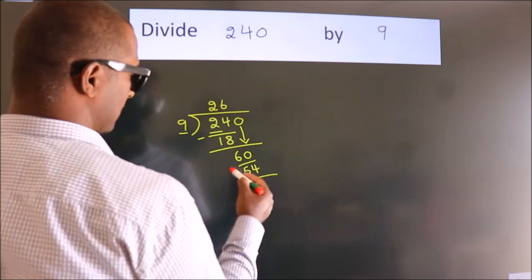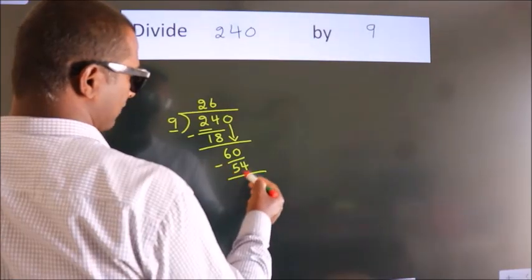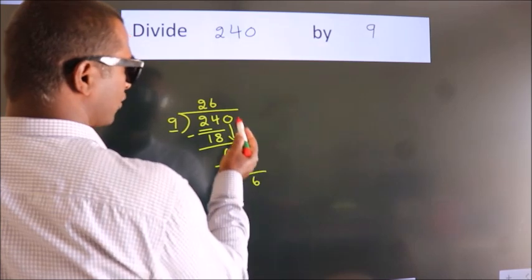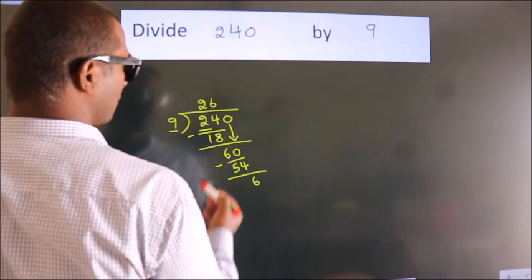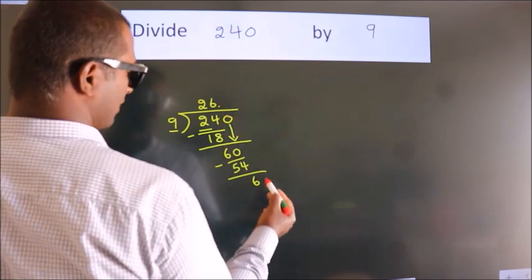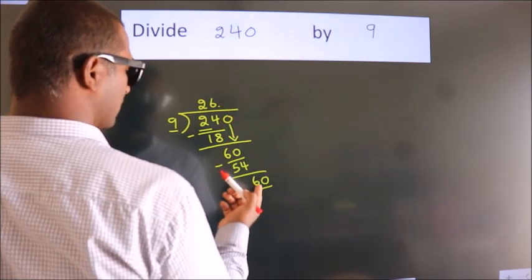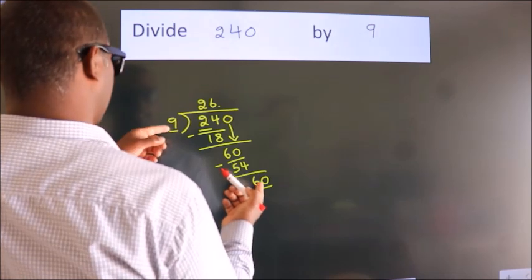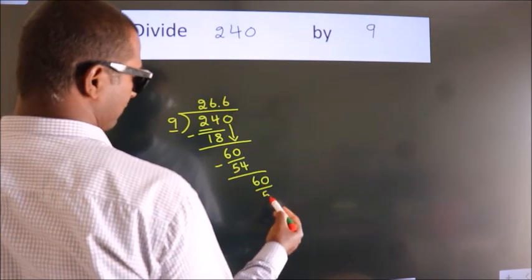Now we subtract, we get 6. After this, no more numbers to bring down, so what we do is we put a dot and take zero, so 60. A number close to 60 in the 9 table is 9 times 6 equals 54.